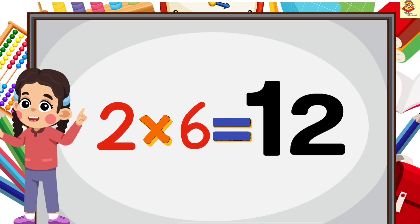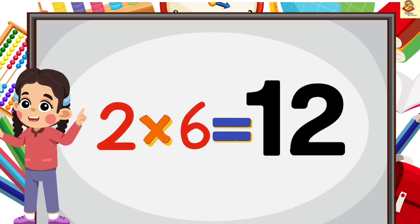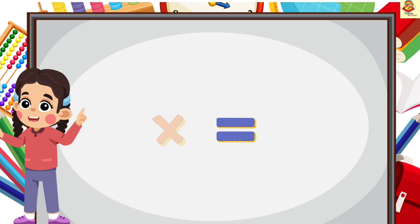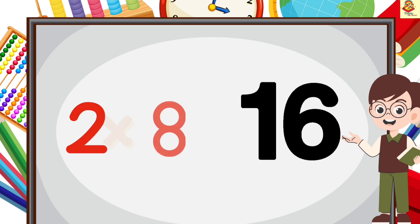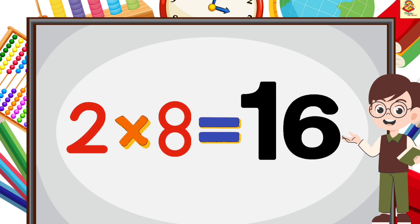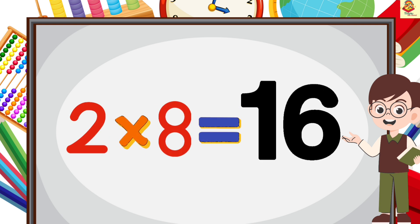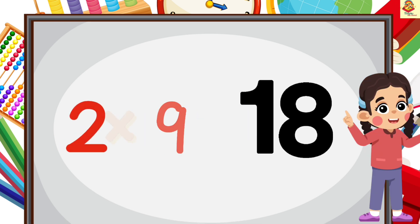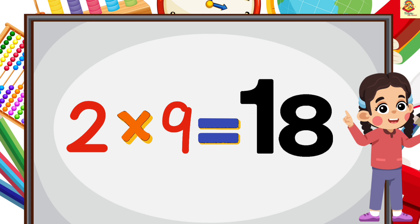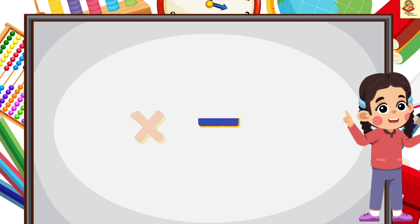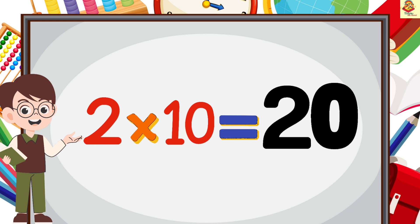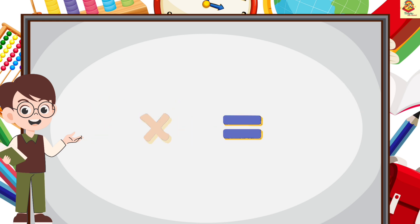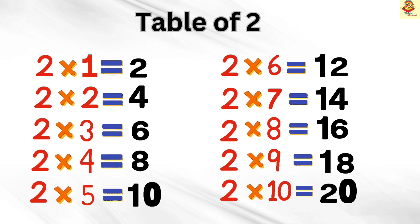2 6's are 12, 2 7's are 14, 2 8's are 16, 2 9's are 18, 2 10's are 20. Very good, awesome!